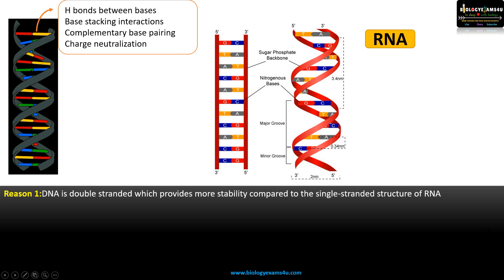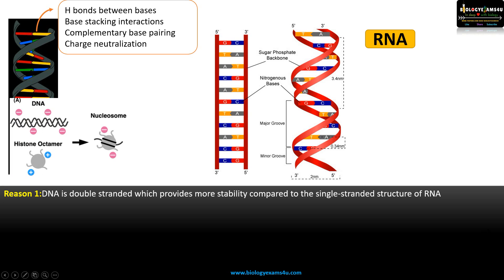Finally, charge neutralization: DNA is negatively charged because of the presence of the phosphate group, but it is wrapped around histone proteins, which are positively charged. This neutralization of negative and positive charges between histone and DNA leads to more hydrogen bonding interaction within the DNA structure, providing more stability.